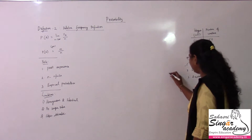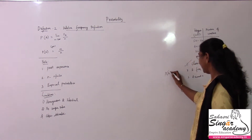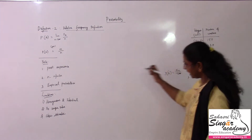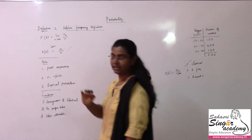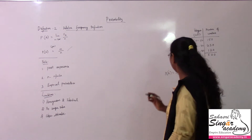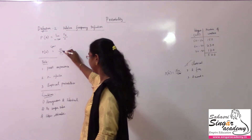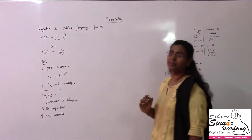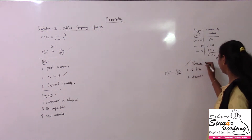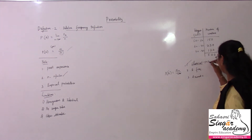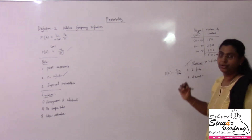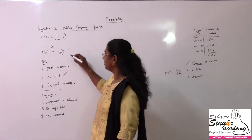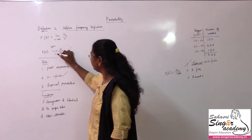The probability of some event A is equal to the favorable number of events divided by the total number of events — it is the same approach: favorable divided by total. But here the n value will be infinite. In the classical definition, the major limitation was that n is finite. In this case, n is infinite, so we will apply the limit as n tends to infinity.